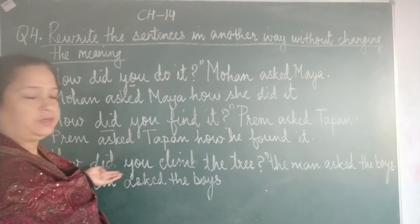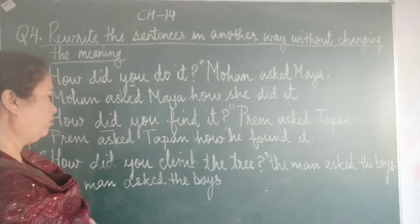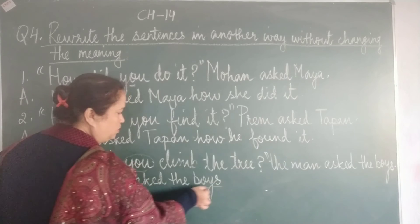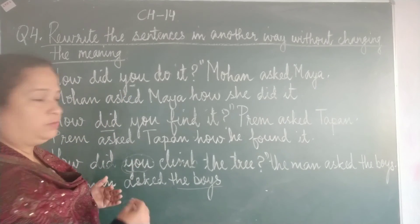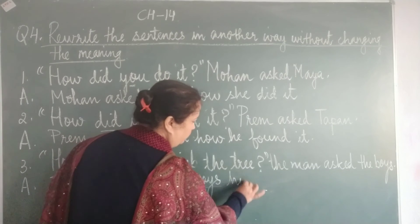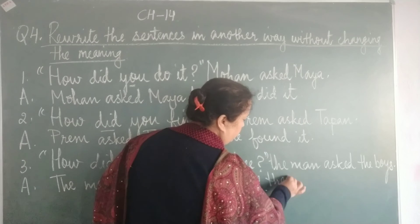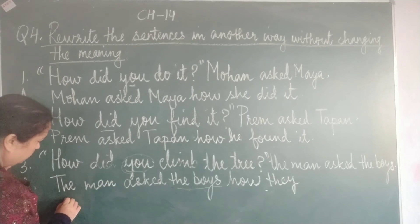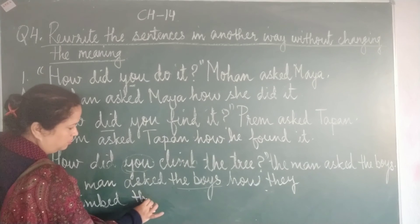Now since the question has 'did', we know that we changed the verb from the V1 form to the V2 form, that is the past tense form. Instead of 'you', I said 'they'. So who are we talking about? We are talking about the boys. The man wants to know how the boys climbed the tree. Now instead of 'the boys' we will be writing 'they', and we will change the verb to the past tense form. The man asked the boys how they climbed the tree.